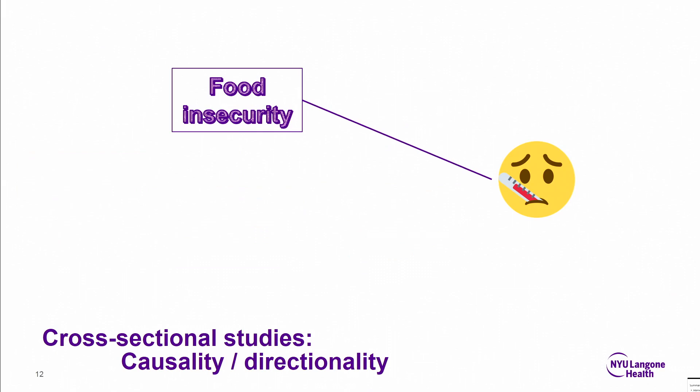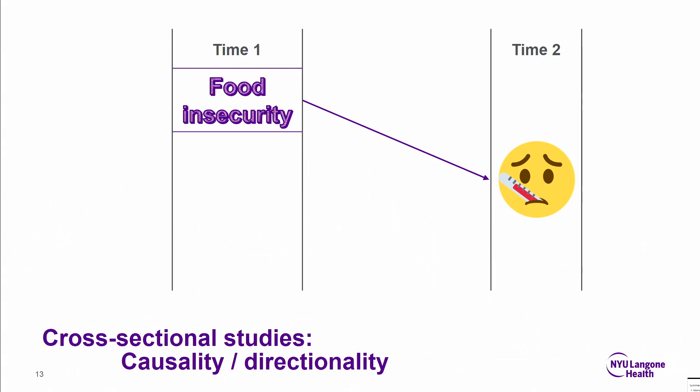Cross-sectional studies can't really tell us much about causality or directionality. Longitudinal research would help with the directionality issue. It would be nice if we had some large prospective cohort studies over several years where we interviewed people every six months and whatnot. In the absence of that sort of time and money, some people have done creative work — including some people in this room — using administrative data. A lot of the administrative data sets that we often use as health services researchers are sort of lacking in robust social determinant measures, but there are ways that you can combine health services data with data from other sectors.